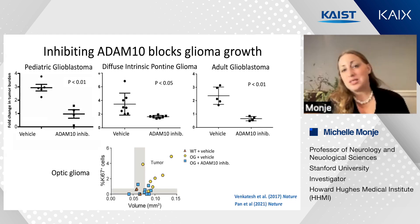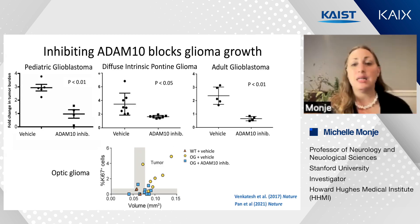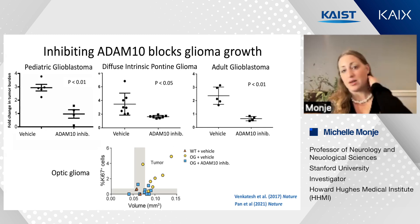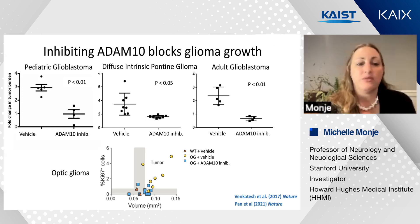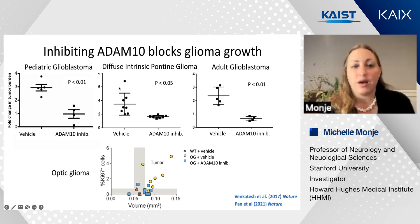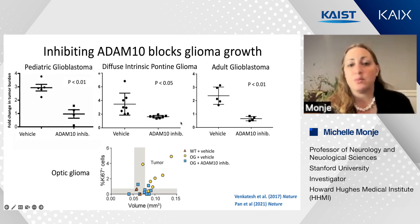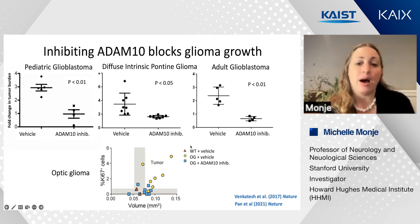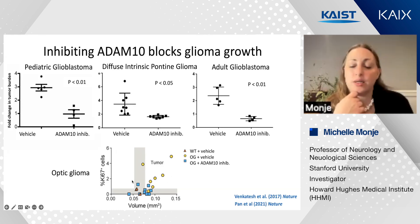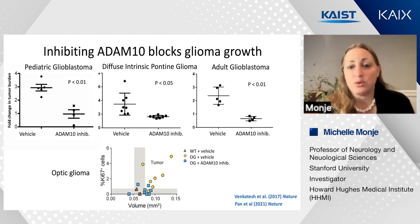Neuroligin-3 is a really interesting therapeutic target, and ADAM10 is the enzyme that mediates its cleavage and release into the tumor microenvironment. So we tested the idea that by inhibiting ADAM10, we may slow these various forms of high- and low-grade glioma. Indeed, we find that across multiple forms of high-grade glioma—pediatric hemispheric glioblastoma, diffuse midline glioma of the pons, hemispheric glioma of adulthood, and optic pathway glioma occurring in association with neurofibromatosis type 1—we can starkly inhibit tumor growth and progression.